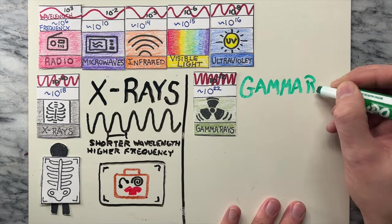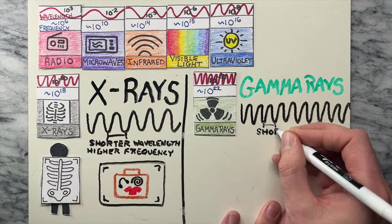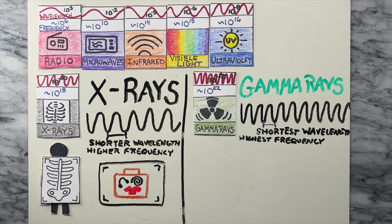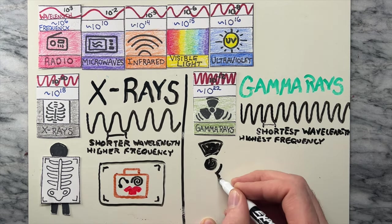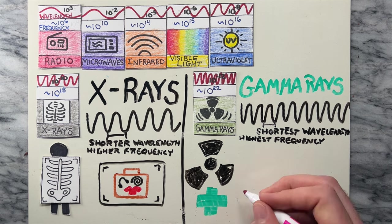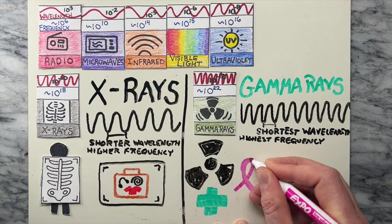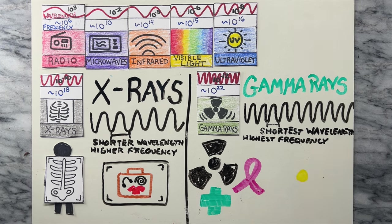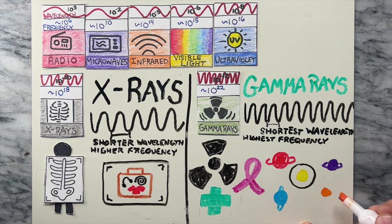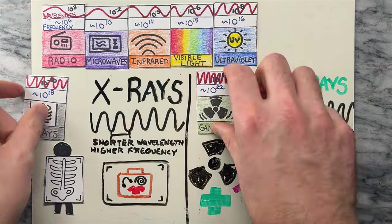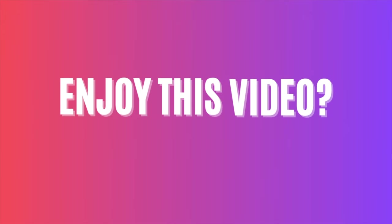At the end of the spectrum are the shortest wavelengths and the highest frequencies — the gamma ray, emitting from radioactive sources. These high-energy waves find applications in medical treatments, particularly in targeted cancer therapies, as well as in astrophysics where gamma rays can aid in the study of cosmic phenomena.